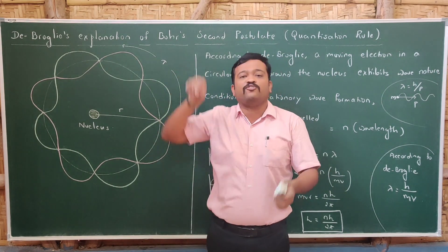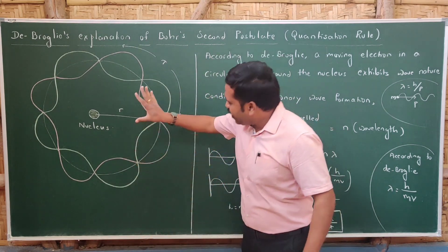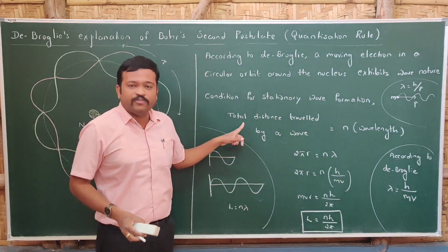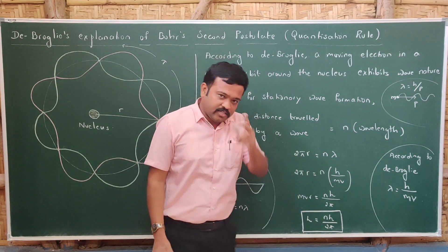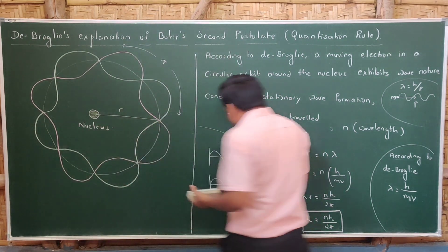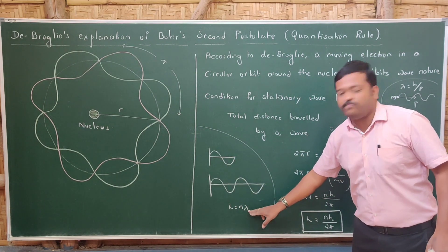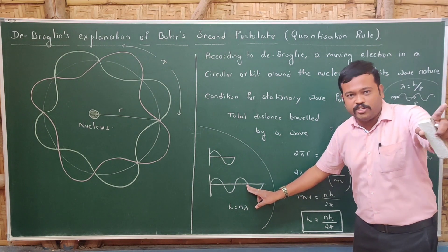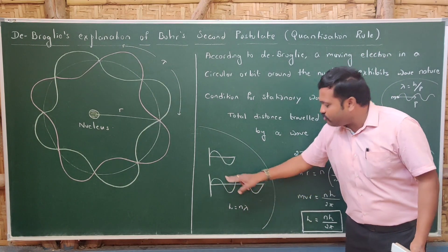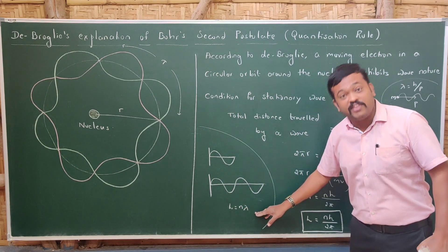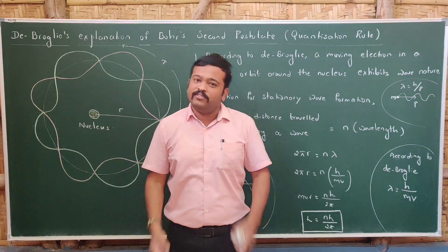Applying this hypothesis: when electrons revolve around the nucleus, they exhibit wave nature and a stationary wave is formed. The condition for stationary wave formation is that the total distance traveled by the wave must be an integral multiple of its wavelength. For a rope, stationary waves form only when the length is an integral multiple of the wavelength — otherwise no stationary wave is formed.